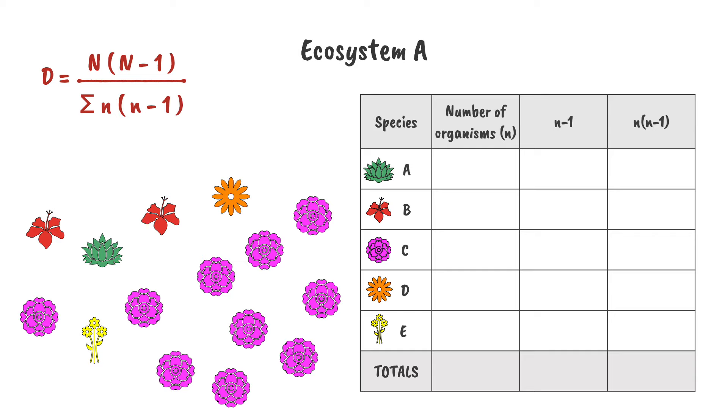First, we'll add in the population of each and then total the column. Next, we subtract one from each of those values. Don't ask me why, just trust me, it's necessary for our calculation. Next, we multiply the first two columns together, and then we add those values together.